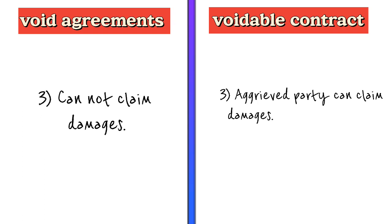The third difference is regarding damages. You cannot claim damages in a void agreement as it is not enforceable by the court of law. But in the case of a voidable contract, the aggrieved party can claim damages.